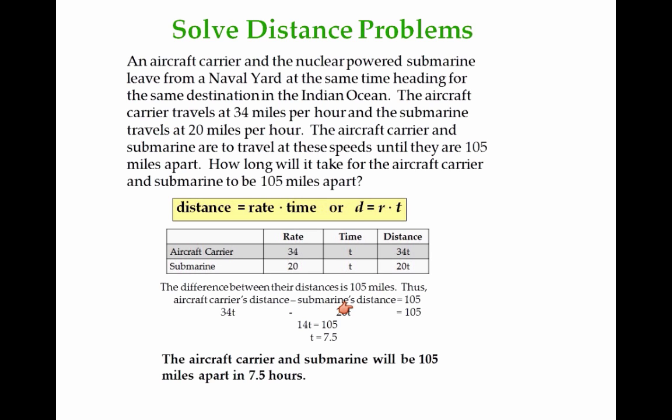Therefore, the aircraft carrier's distance minus the submarine's distance would be equal to 105. It would be 34T minus 20T must be equal to 105. Here I have my formula or equation where I can solve for T easily. Divide both sides by 14, the time would be 7.5. The aircraft carrier and the submarine will be 105 miles apart in 7.5 hours.